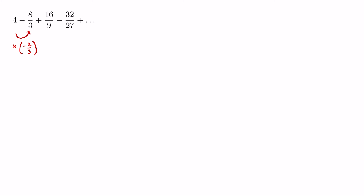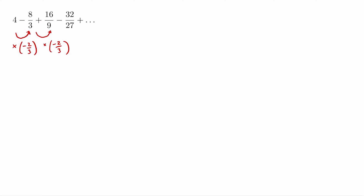Similarly, to get the next term, which is 16 over 9, we multiply negative 8 thirds by negative 2 over 3 again — so negative 2 thirds times negative 8 thirds gives 16 over 9. And again, to get the next term, we multiply 16 over 9 by negative 2 thirds. So we have a common ratio, and this is a geometric series. This negative 2 thirds is our common ratio, denoted by R.